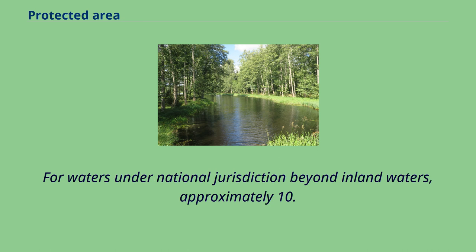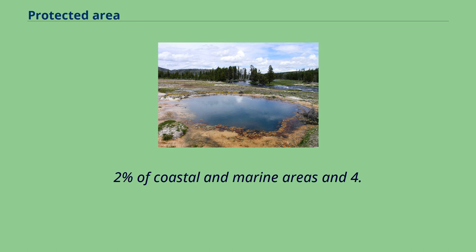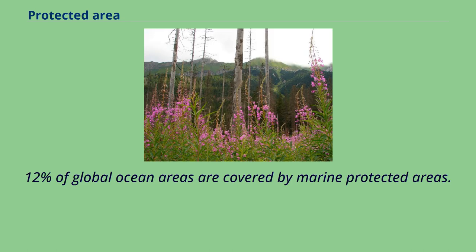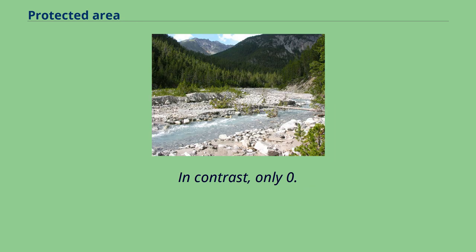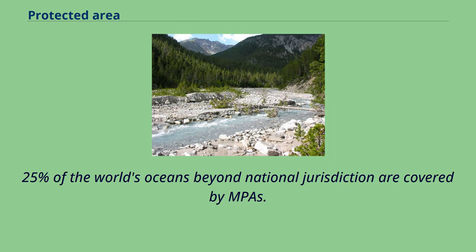For waters under national jurisdiction beyond inland waters, approximately 10.2% of coastal and marine areas and 4.12% of global ocean areas are covered by marine protected areas. In contrast, only 0.25% of the world's oceans beyond national jurisdiction are covered by MPAs.